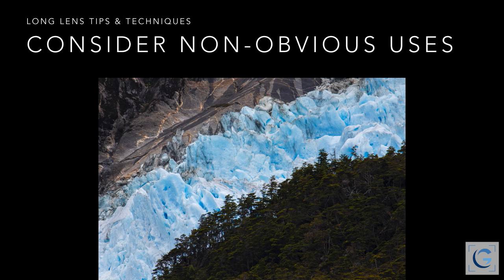A long lens gives you a whole new context for the subjects you photograph. In the fjords of Chile, after photographing a glacier head-on, as we worked our way down the fjord and got further away, I realized there was another shot — the layering of the trees, the glacier, and the rocks. Part of why I like this photo is it gives a much better sense of scale of just how huge that glacier really is. Without a long lens, I would have never been able to capture it, and without the experience of shooting with a long lens, I wouldn't have even realized it was possible.